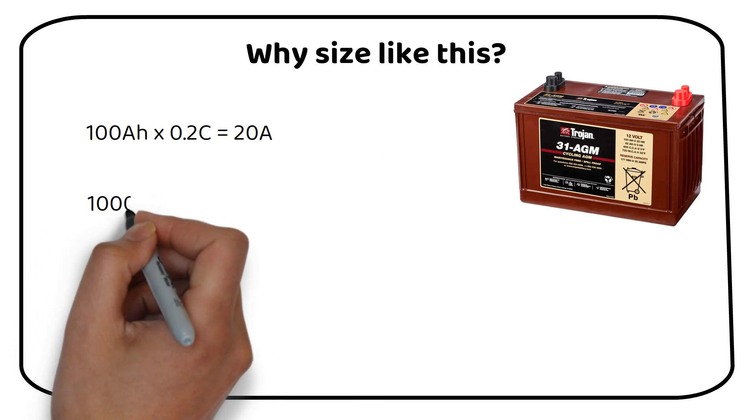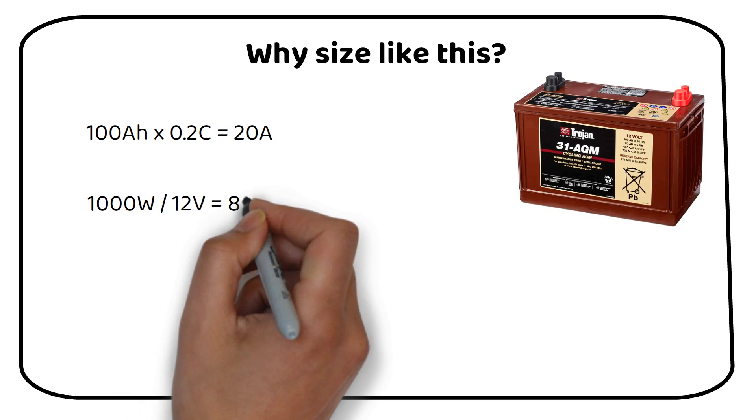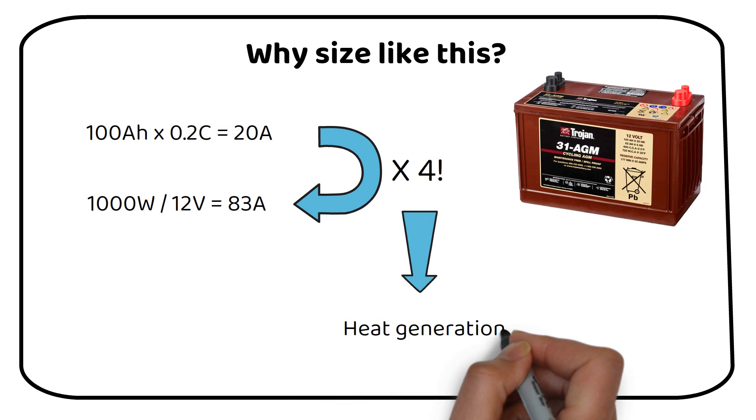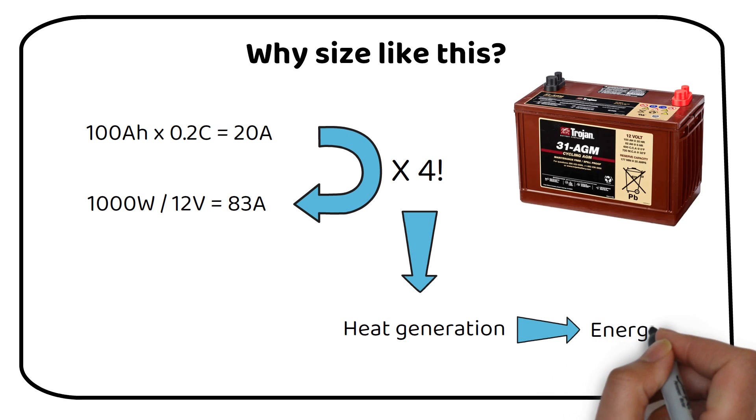If we just use one battery for a 1000 watt inverter, it operates at 4 times its recommended discharge rate. Such a scenario leads to excessive heat generation, causing energy loss and potentially shortening the battery's lifespan.